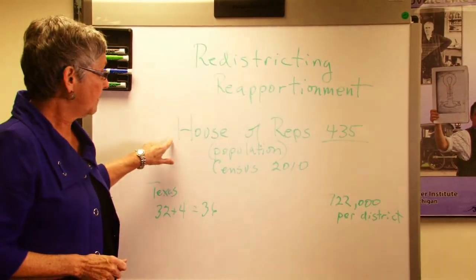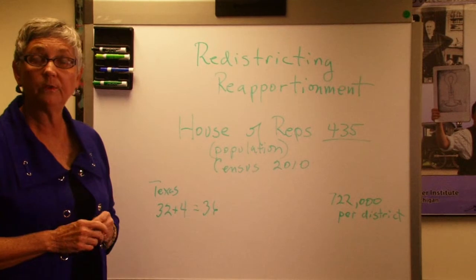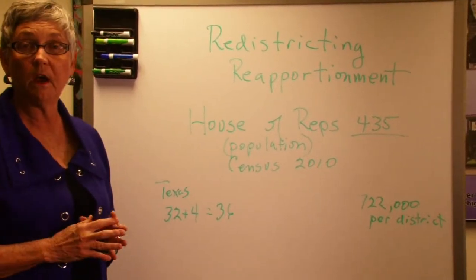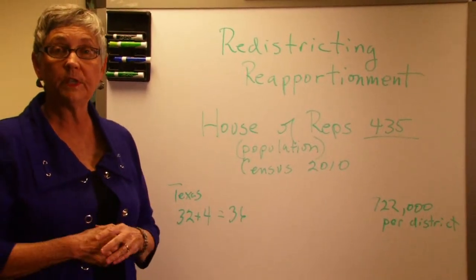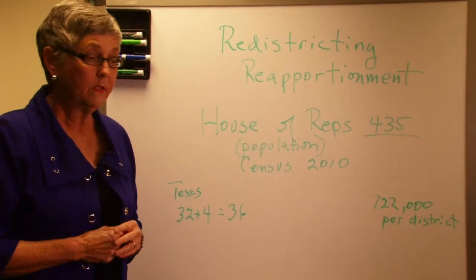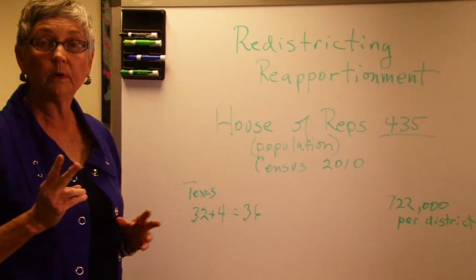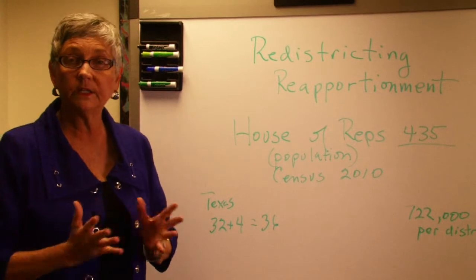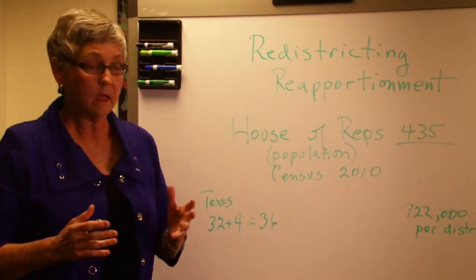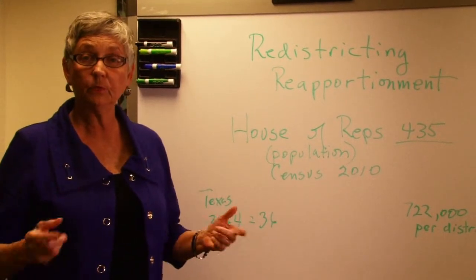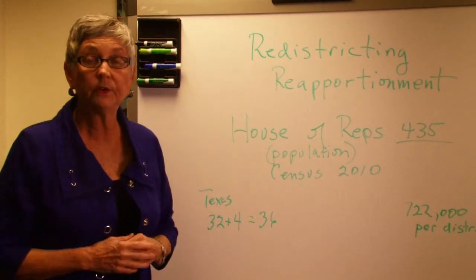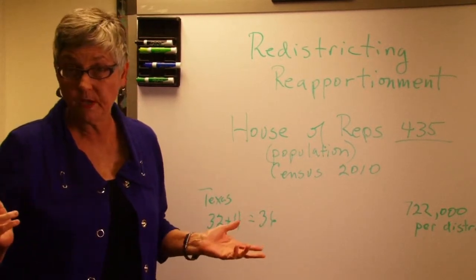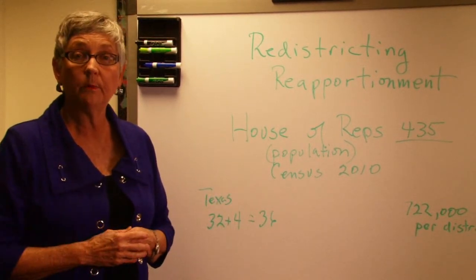The House of Representatives has 435 representatives — this is in Congress. We have a Senate and a House of Representatives. There are 100 members of the Senate, two per state, so there's no need for any districts in a state. Even if you have a large state like Texas, we have two senators. A small state like Rhode Island has two senators, so districts aren't important for the Senate.